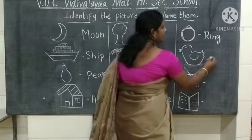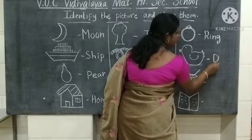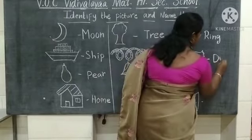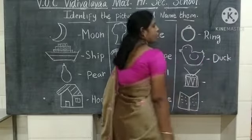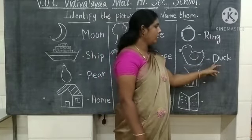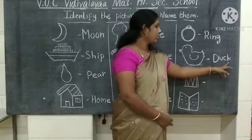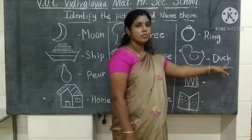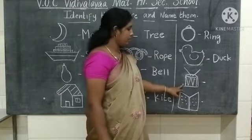What picture is this? This is a duck. What is the spelling of duck? D-U-C-K — duck. What is the spelling of duck? D-U-C-K — duck.